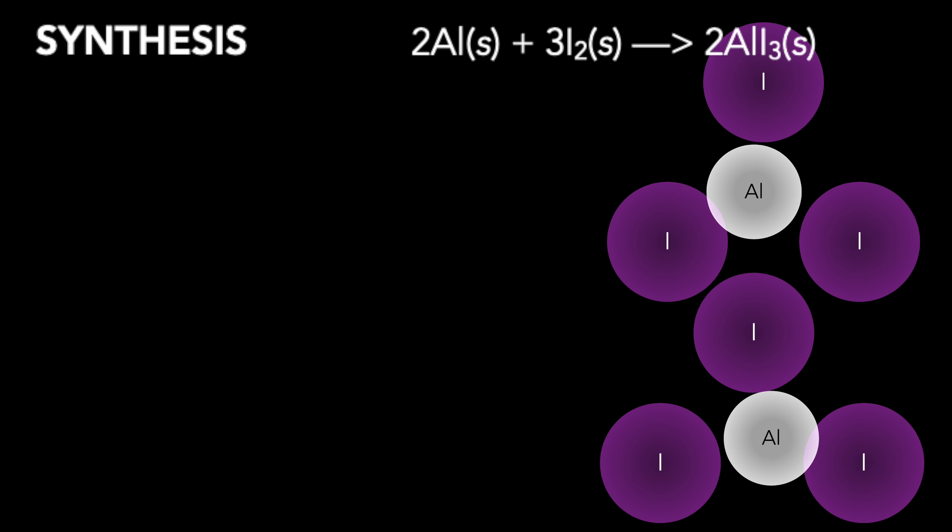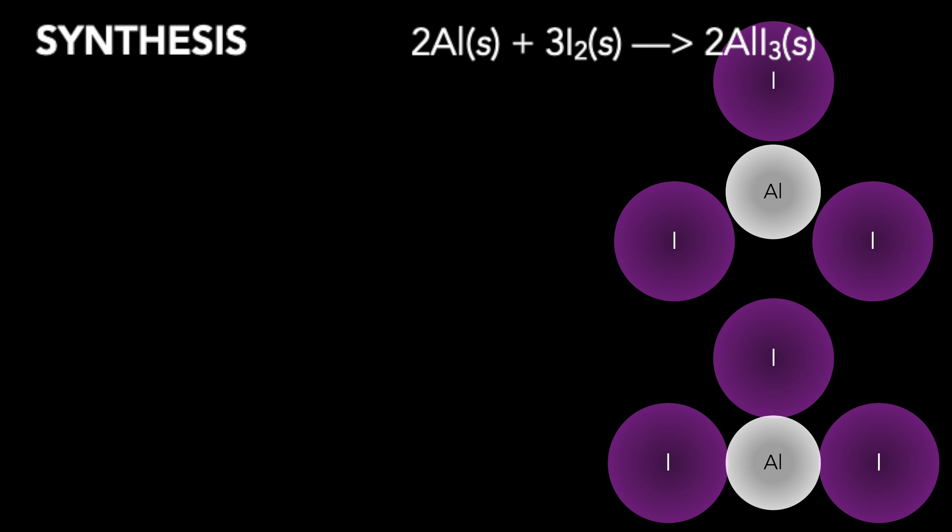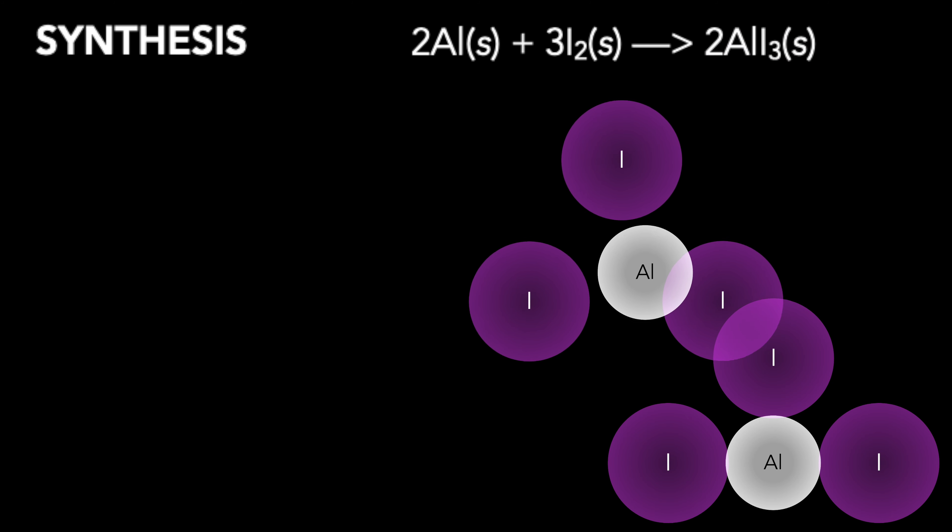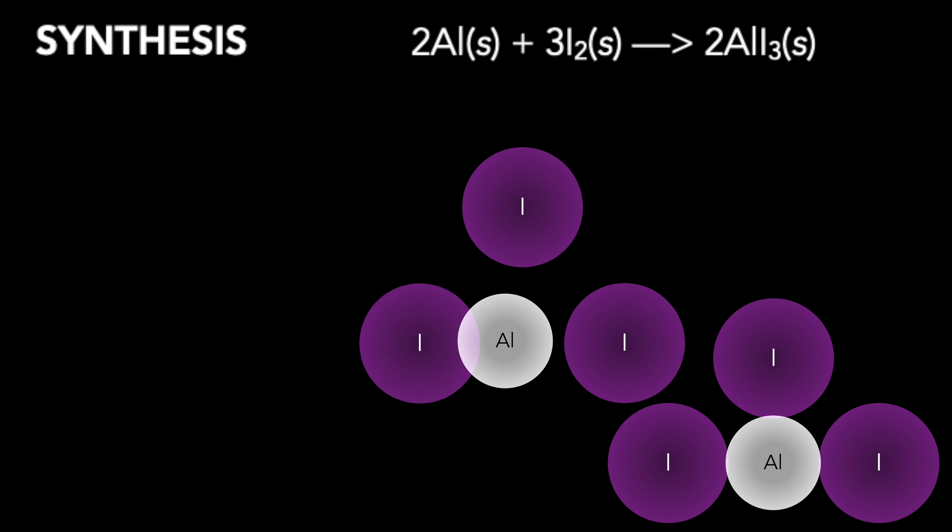The result is just as the synthesis reaction depicts. One aluminum atom combines with three iodide particles to give a more complex substance. We simply result with two of them.